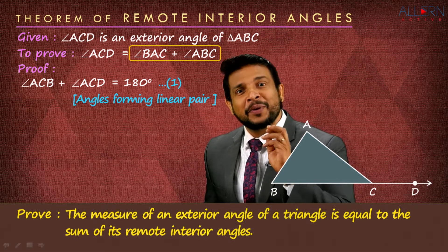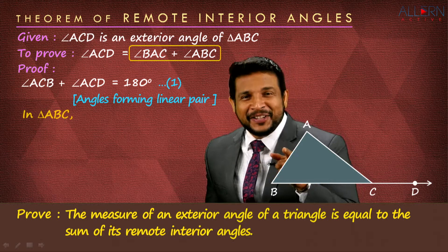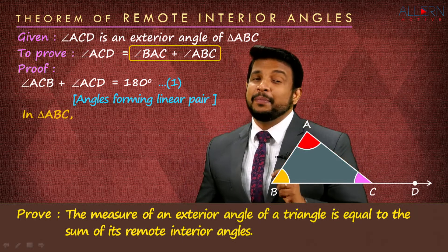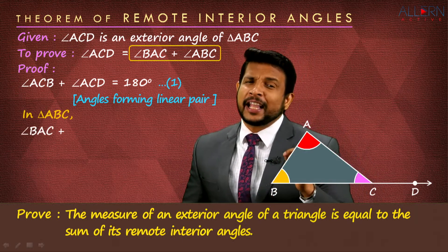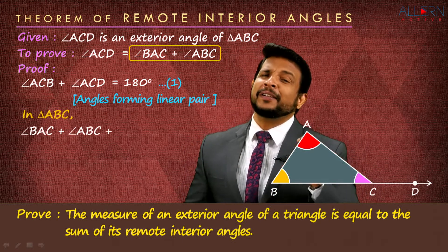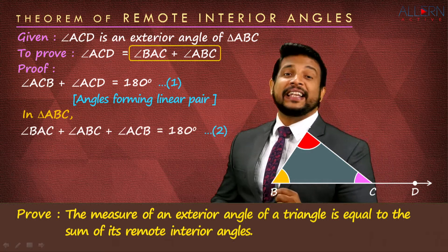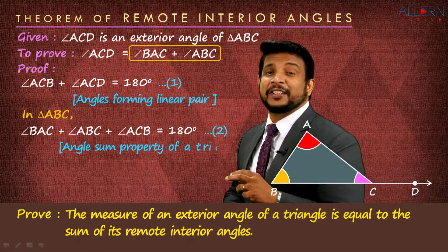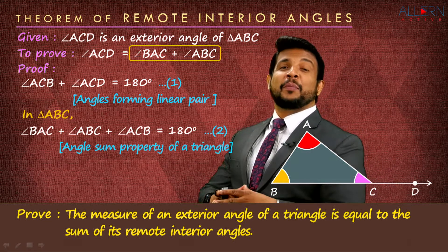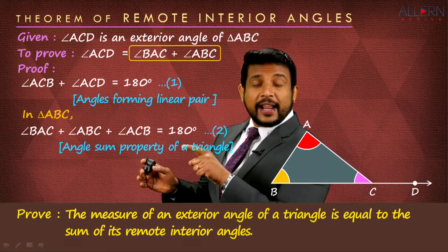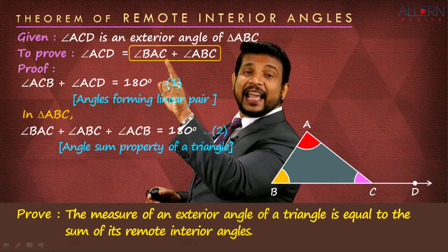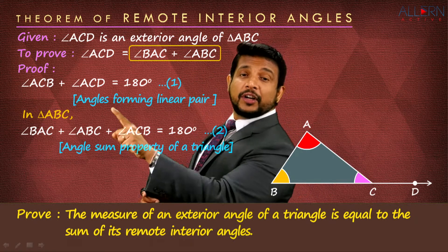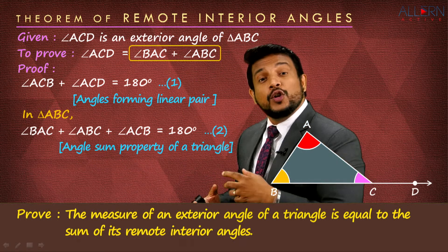So let's use that. In triangle ABC: angle ABC plus angle BAC plus angle ACB is equal to 180°. The reason is the angle sum property of a triangle. We wrote this so that we get angle BAC plus angle ABC — we wanted that. Understand why we are writing it; don't just write it because I'm saying it.